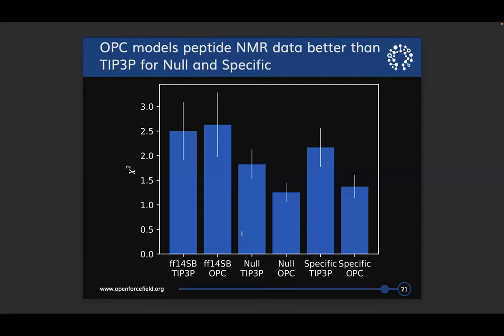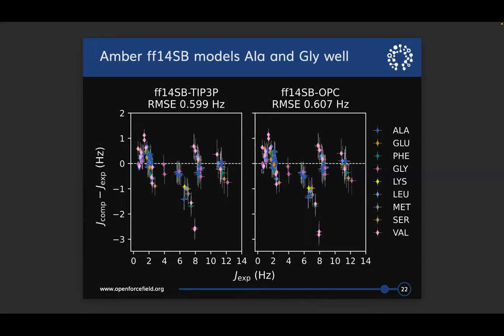Showing chi-squared values for FF14SB and then my null and specific models with both TIP3P and OPC water, an immediate conclusion is that in general these force fields perform better with OPC water than TIP3P water, giving better agreement with NMR experiments. Looking at scatter plots for individual scalar couplings — with experimental coupling on the x-axis and the difference between computed and experimental values on the y-axis — FF14SB does very well on small residues like alanine and glycine, which cluster closely around zero, but does poorly on bulkier and more hydrophobic residues like threonine, valine, and phenylalanine.